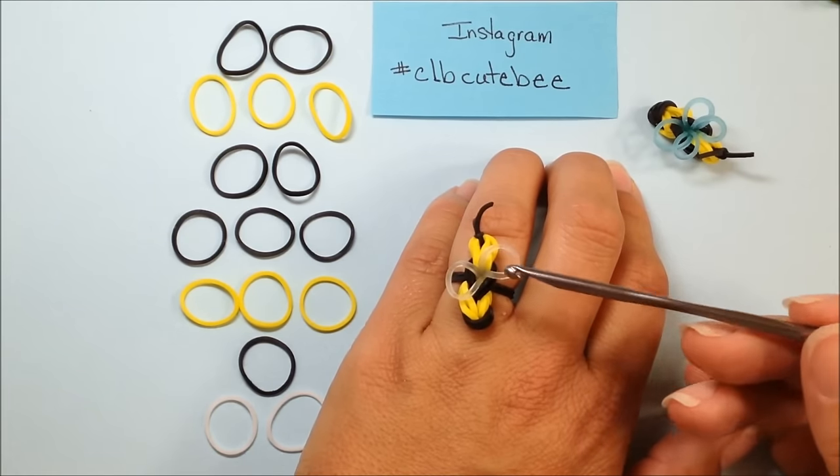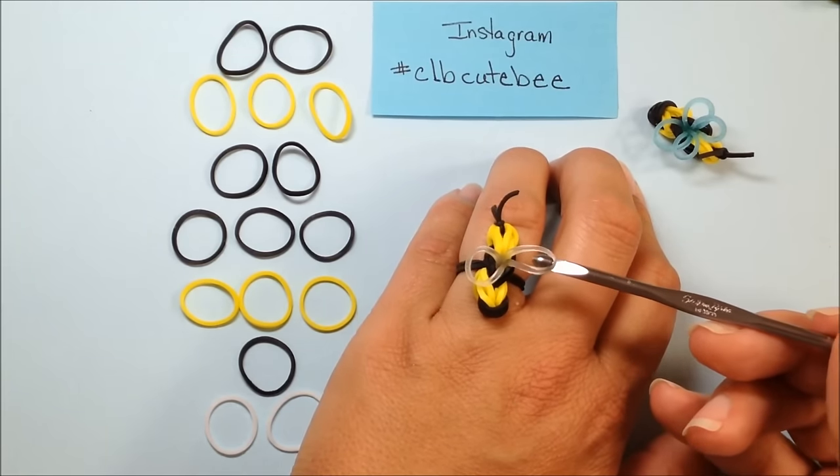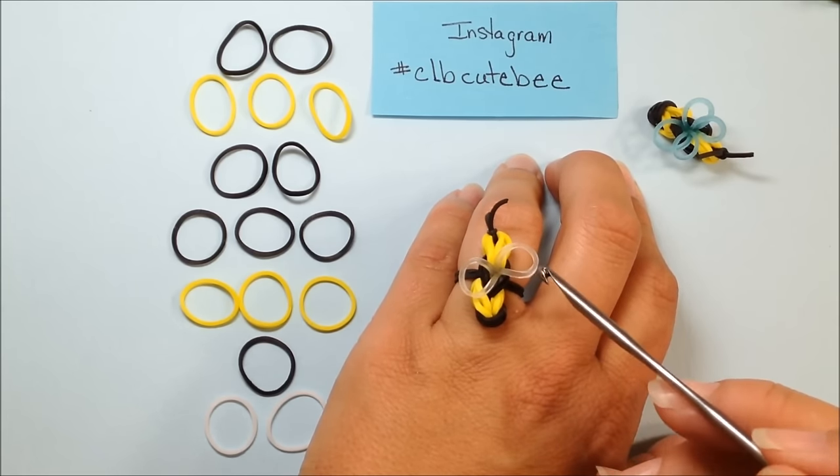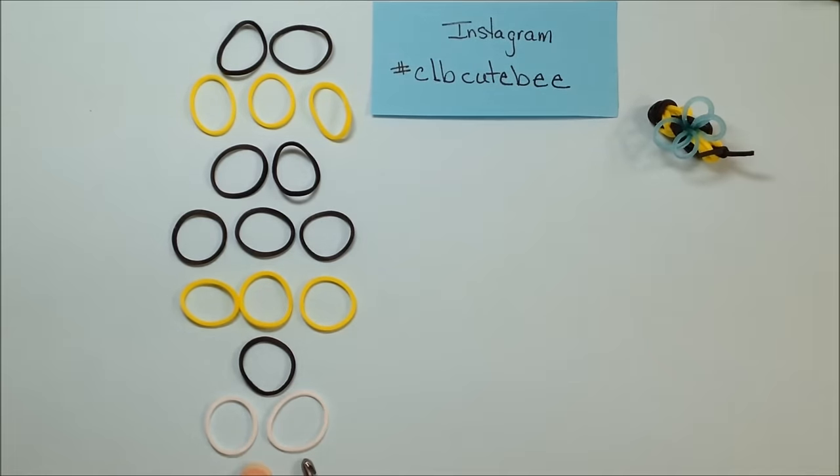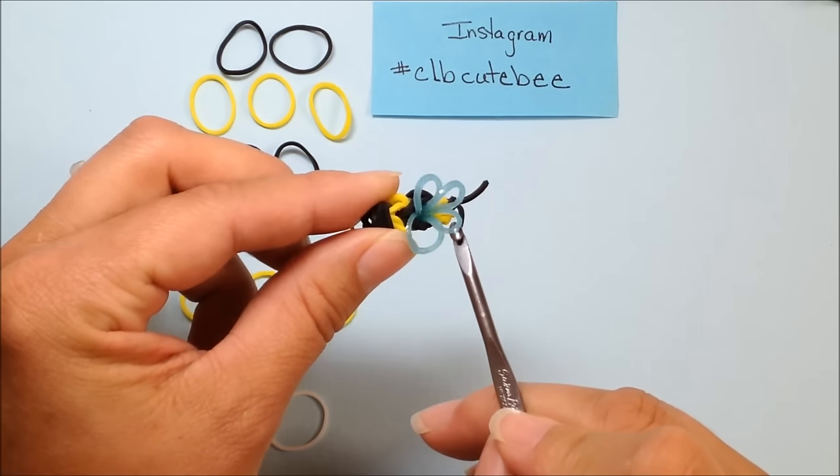A major difference in this lesson will be on my loomless bee I did an iridescent band for the wings. You're going to need two bands for the wings. Today I'm using white or you can also use blue, so you need to choose your wing color.